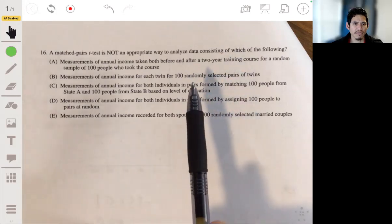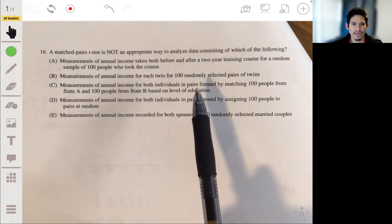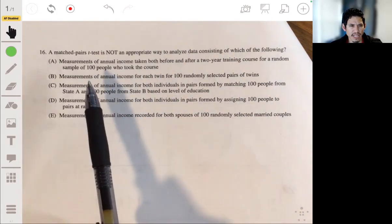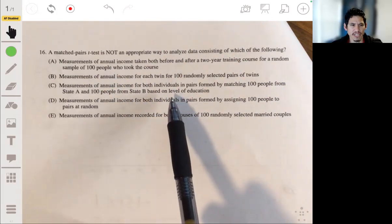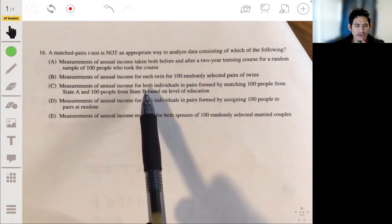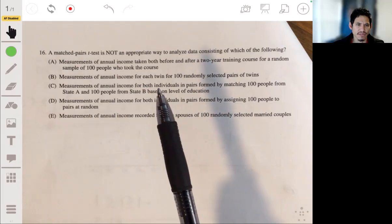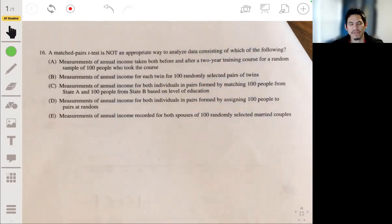Measurements of annual income for both individuals in pairs formed by matching 100 people from State A and 100 people from State B based on level of education. Well, the thing is you're breaking them up based on level of education, so you're trying to find similar individuals. So that's okay. Those pairs would be okay to test.